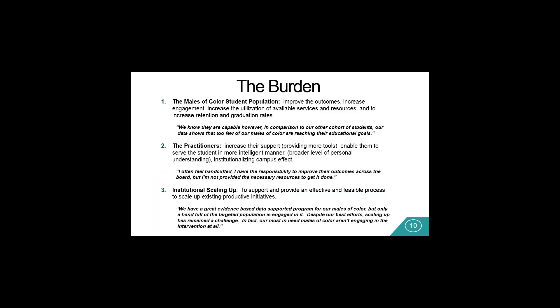Let us look at the burden behind. The first burden was the African-American male student population themselves — we'll use that term interchangeably with males of color. The first burden is to better assist in improving their outcomes: enrollment preparation, persistency, retention, graduation, their involvement in STEM, and so on. Our burden is for the males of color themselves — how do we increase their outcomes and produce more equitable outcomes across the board?